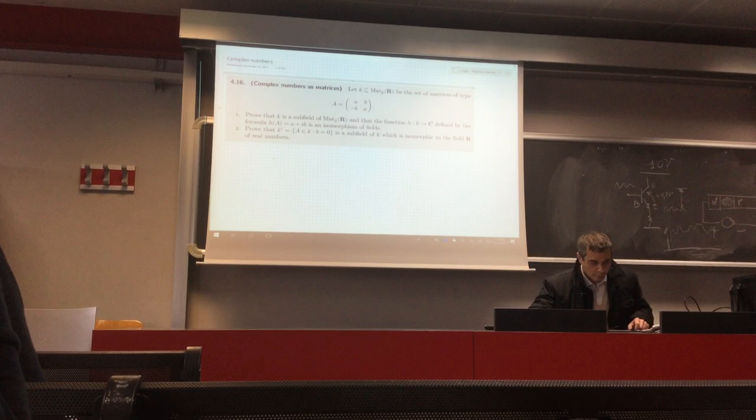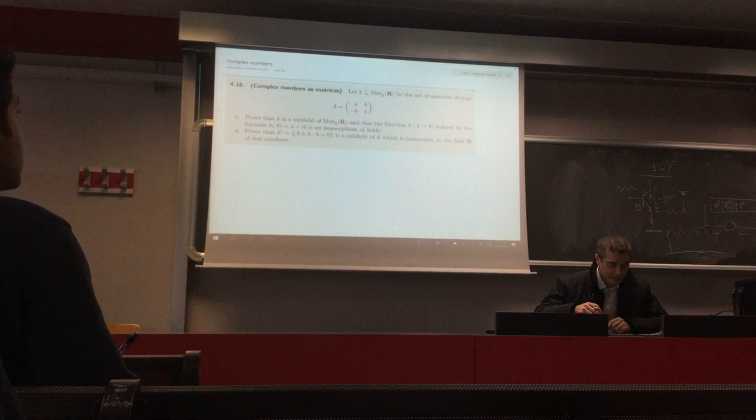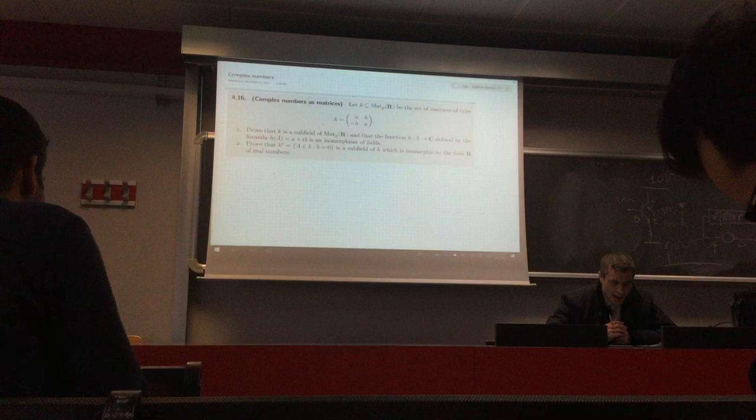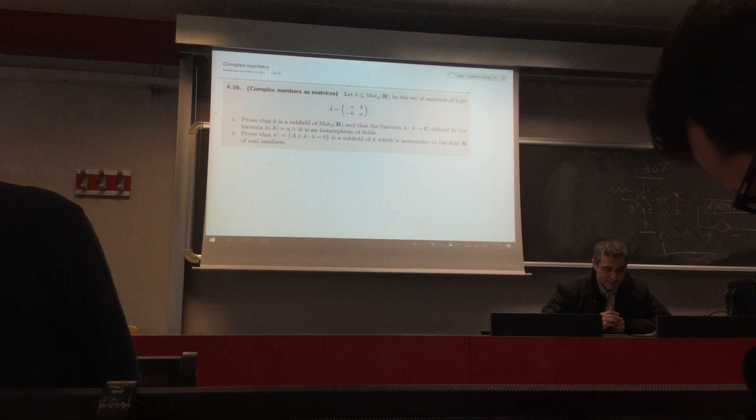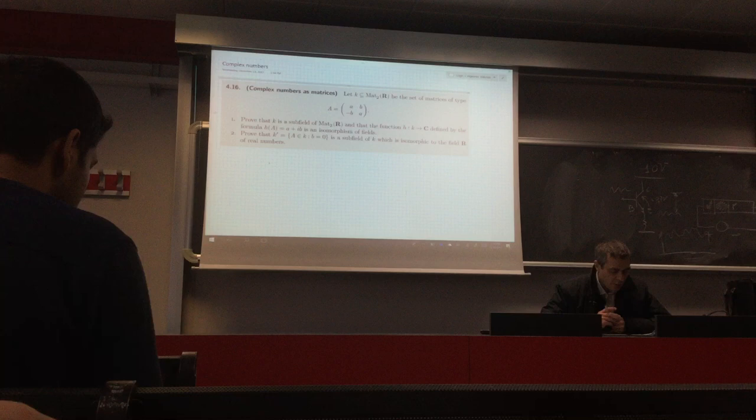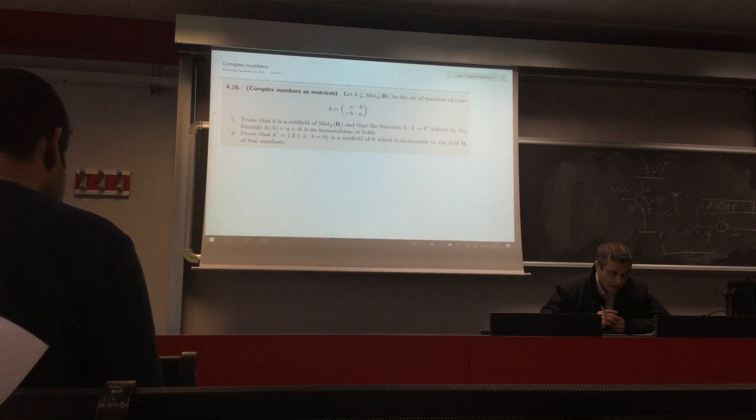Wednesday we dealt with groups, so today we are going to work with exercise 1. Suppose we look at 2 by 2 matrices over real numbers, and we are looking at the set K, a set of 2 by 2 matrices formed by matrices where on the diagonal we have the same element, and the other two elements are opposite to each other. We want to prove that K is a subfield of the ring of matrices.